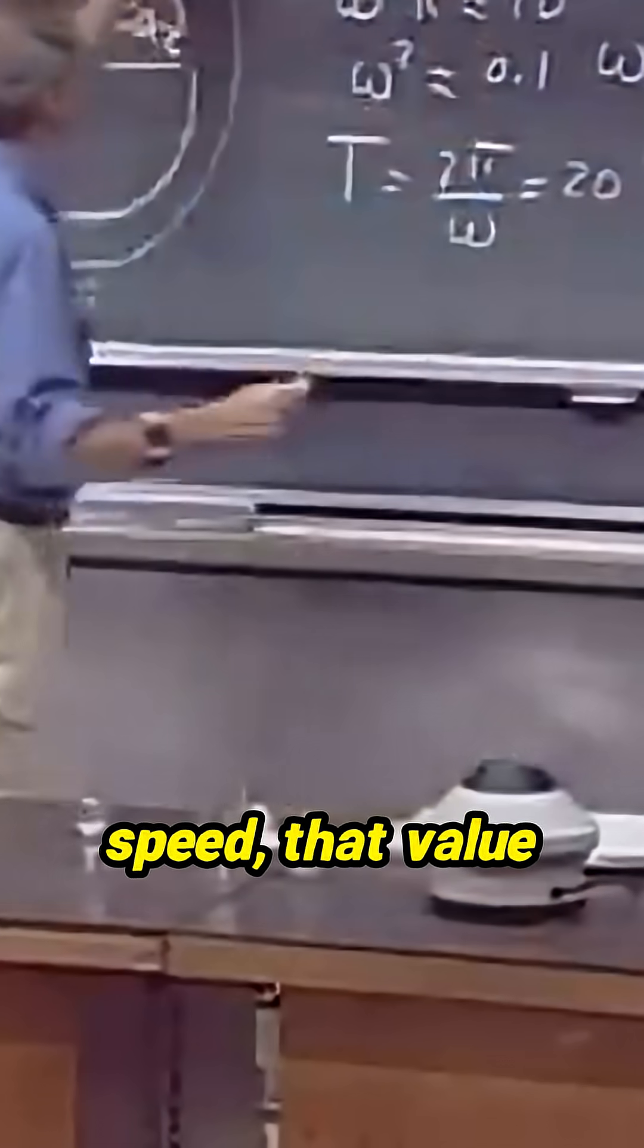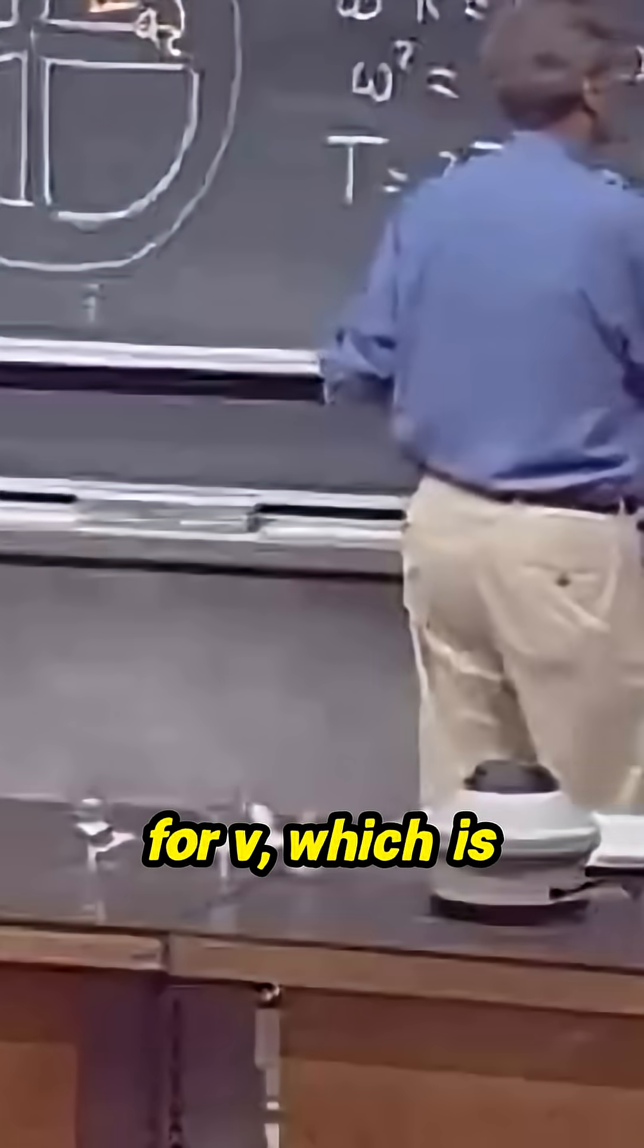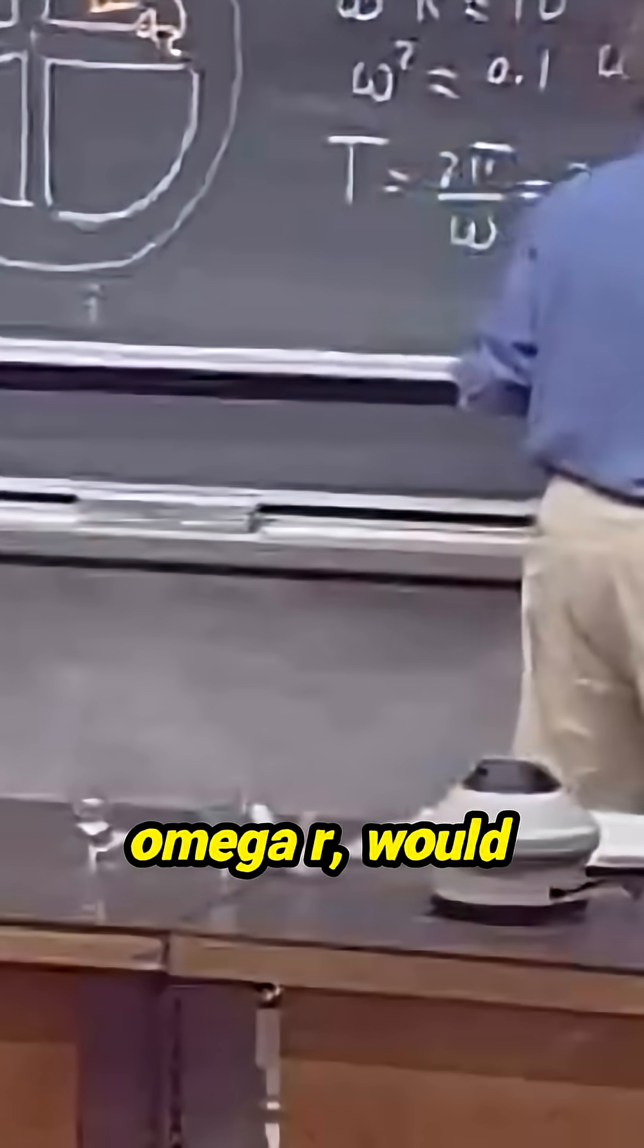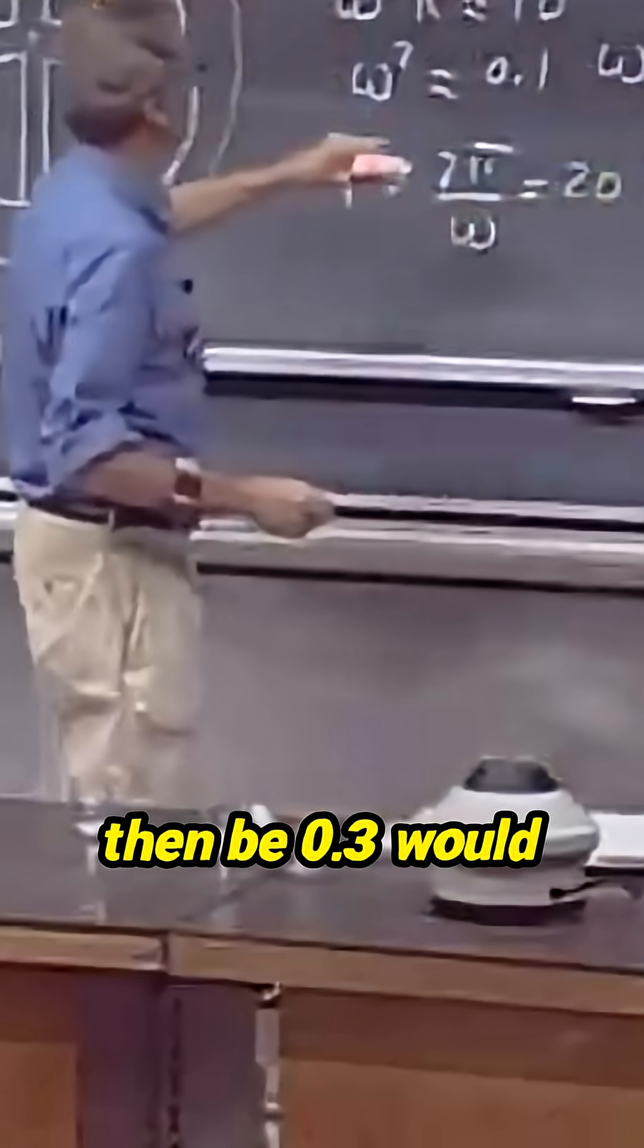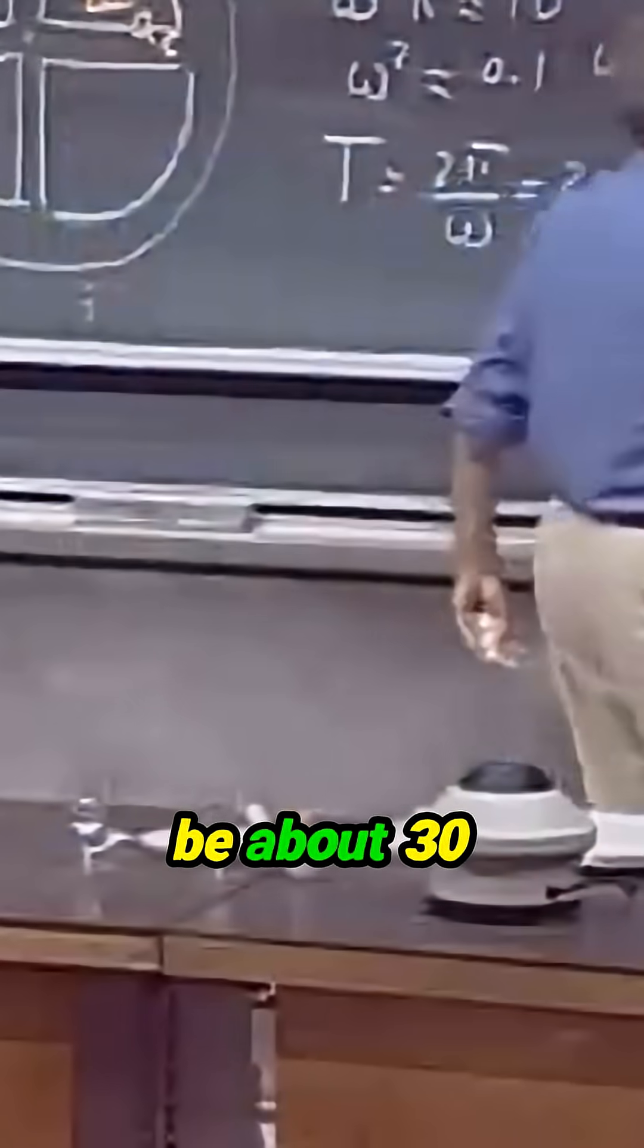And the tangential speed, that value for v, which is omega r, would then be 0.3 times 100, would be about 30 meters per second.